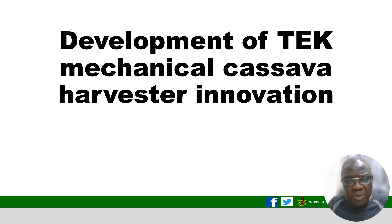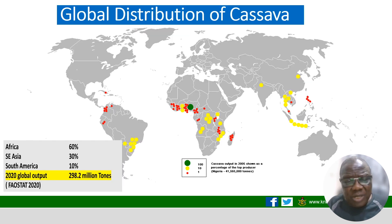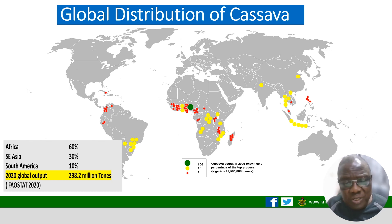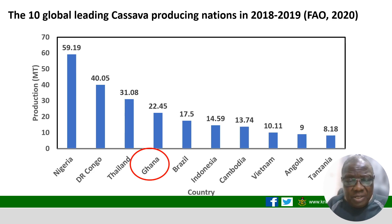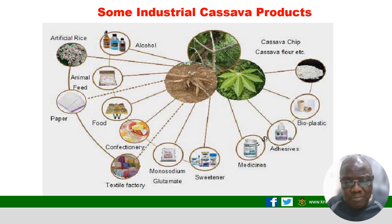Zooming in on the specific topic of developing the mechanical cassava harvester in Africa: cassava is grown within latitude 30 degrees north and south, and Africa is the leading producer with over 60 percent. But most of this production is consumed with little left for processing and exports. If we inject mechanization into production, it could quadruple output, satisfy food requirements, and create surplus for processing and export — generating employment and wealth to keep youth from making dangerous migration journeys.